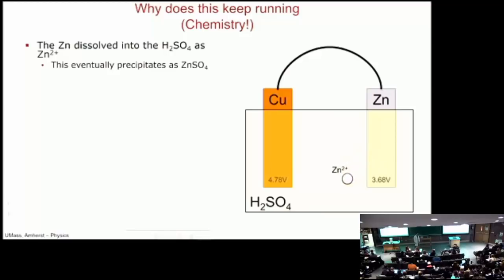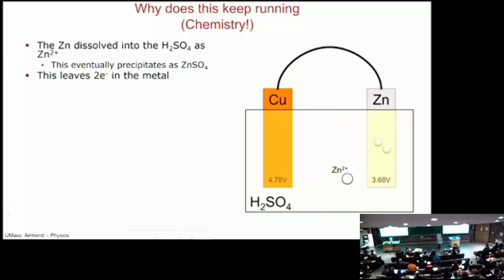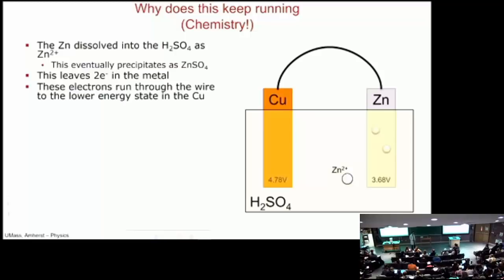Well, zinc dissolves in sulfuric acid. And you spit off zinc two plus. You spit off a zinc two plus ion, which will eventually precipitate out as zinc sulfate. What does that leave behind in the metal? Two electrons. Now zinc two plus popped off. Now I've got two electrons. Now my zinc has a slight negative charge to it. I have two free electrons and my zinc has a slight negative charge to it. Well, we just said that copper is the lower energy state. The electrons would prefer to be in copper because it's a lower energy state. So, over they go. And they run through the wire because it's less resistance to run through the wire than to run through the solution. So, they go through the wire.